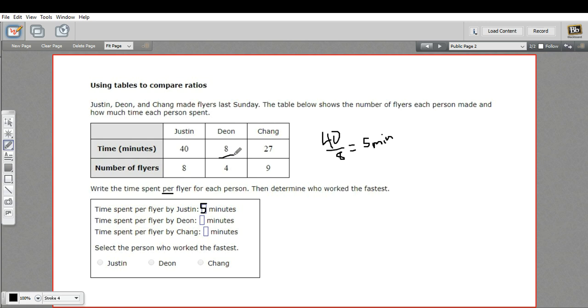If we do the same thing with Dion, it's eight divided by four, we get two minutes per flyer. So much faster.